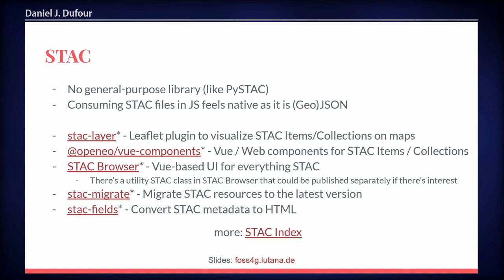You also have the STAC items as GeoJSON, so you can use every tooling available for GeoJSON processing. There are a couple of tools that help you work with the data in more advanced ways. For example, if you have old STAC files and want to migrate to the latest version, there's stac-migrate, which takes your STAC items and collections and migrates them. There's stac-fields, which converts STAC metadata to HTML. And all that is used in higher-level implementations like STAC Browser, OpenLayers view components, and STAC Layer, which are all for visualizations. STAC Browser is basically a UI for STAC where you can browse catalogs and APIs, search in them, and visualize them.